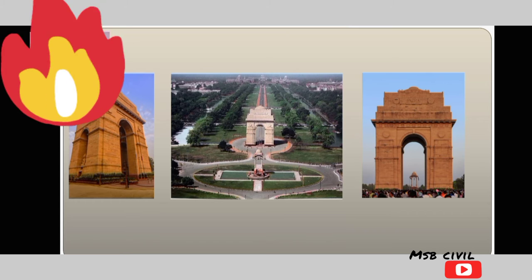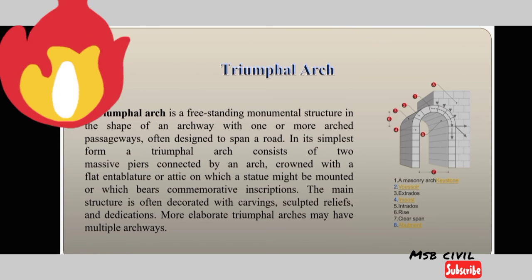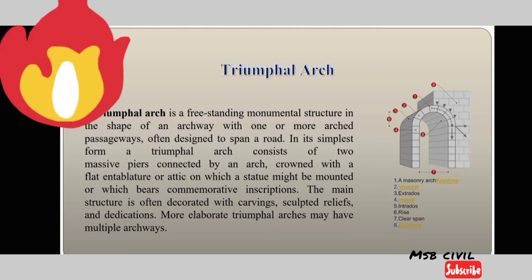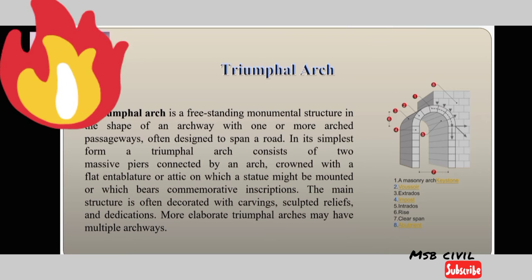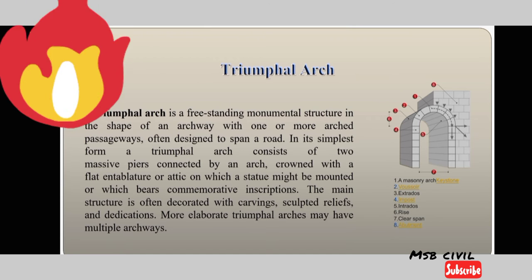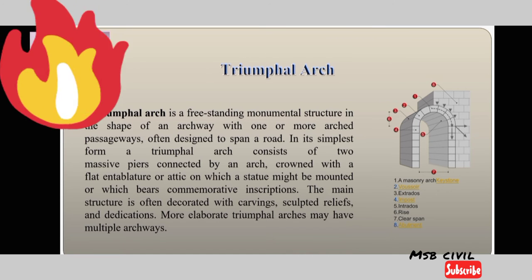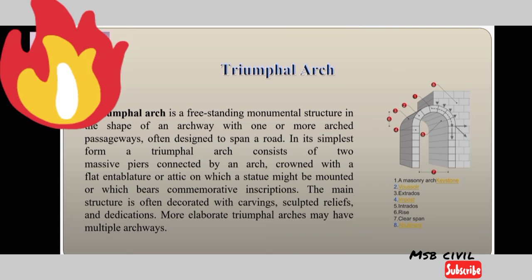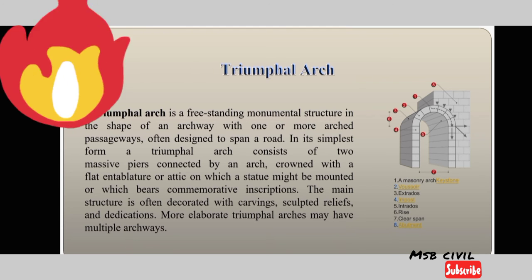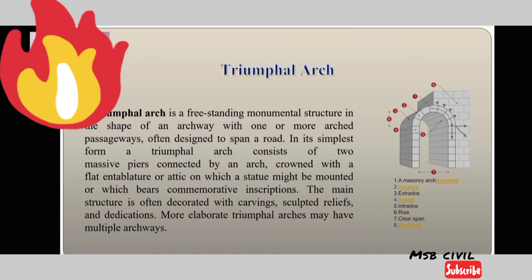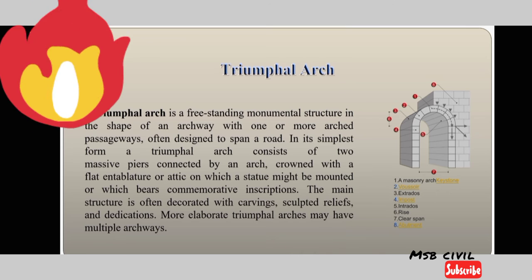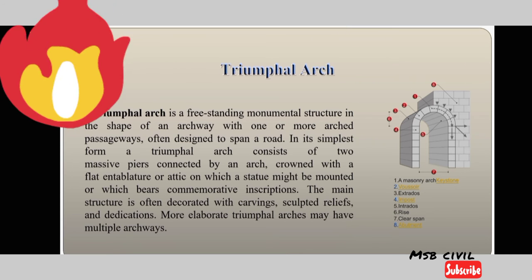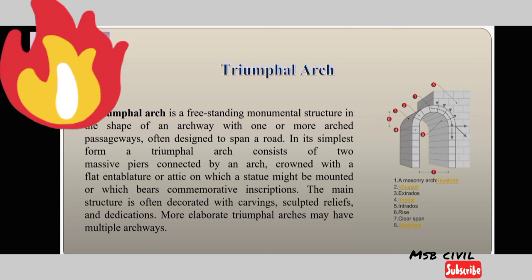These are pictures of India Gate. Now let's talk about the Triumphal Arch. A Triumphal Arch is a freestanding monumental structure in the shape of an archway, with one or more arched passageways. In its simplest form, a Triumphal Arch consists of two massive piers connected by an arch, crowned with a flat entablature or attic on which statues may be mounted or which bears commemorative inscriptions. The main structure is often decorated with carvings, sculpted reliefs, and dedications. More elaborate triumphal arches may have multiple archways.